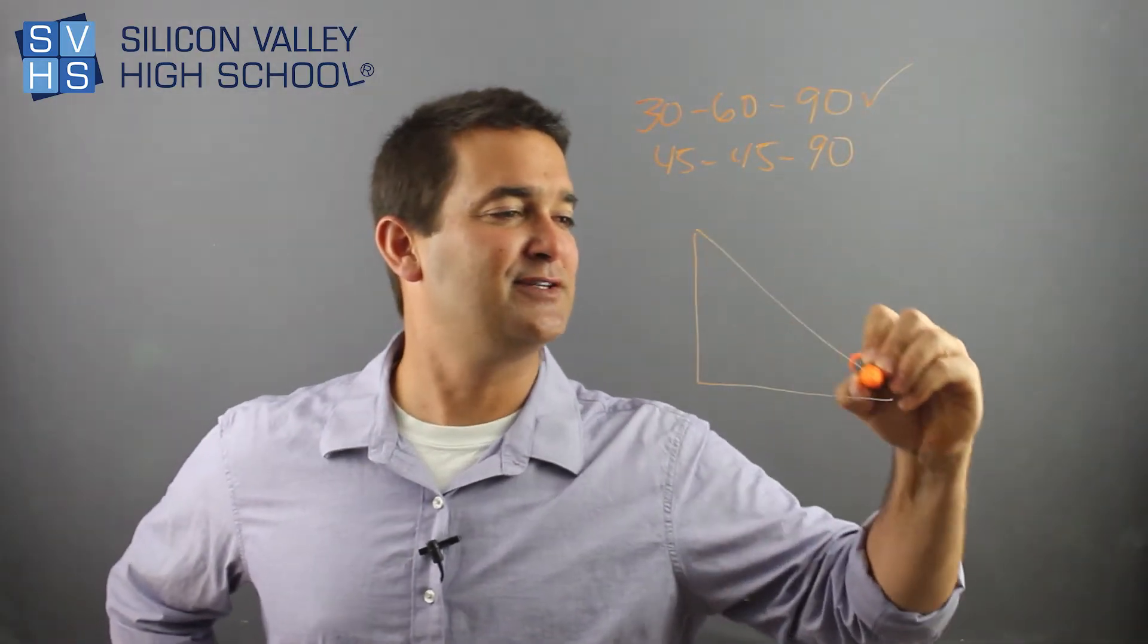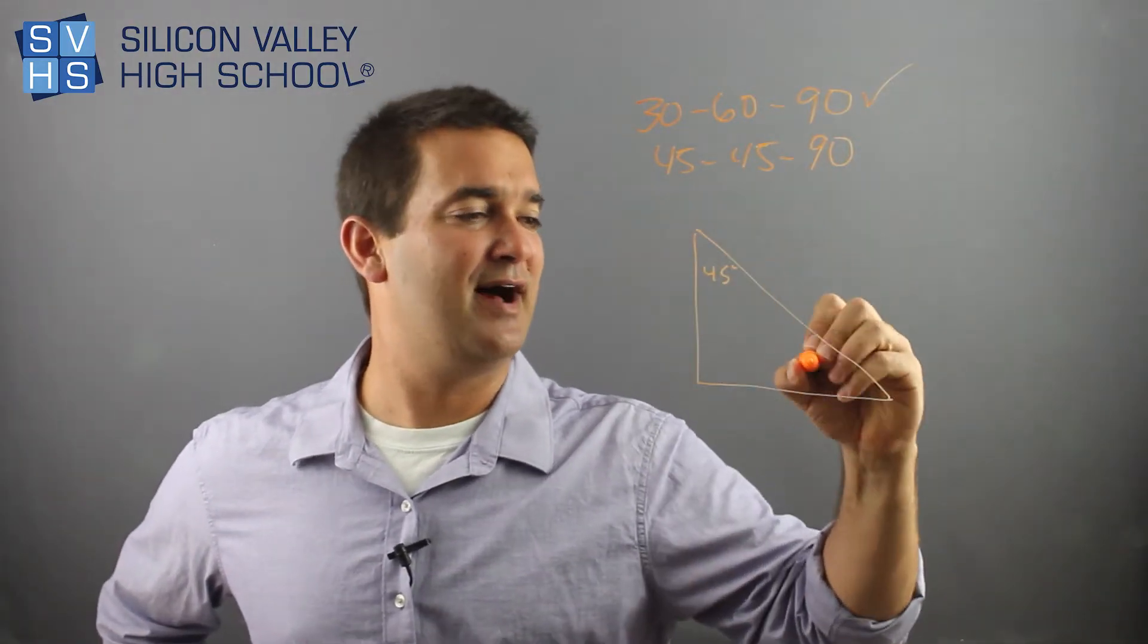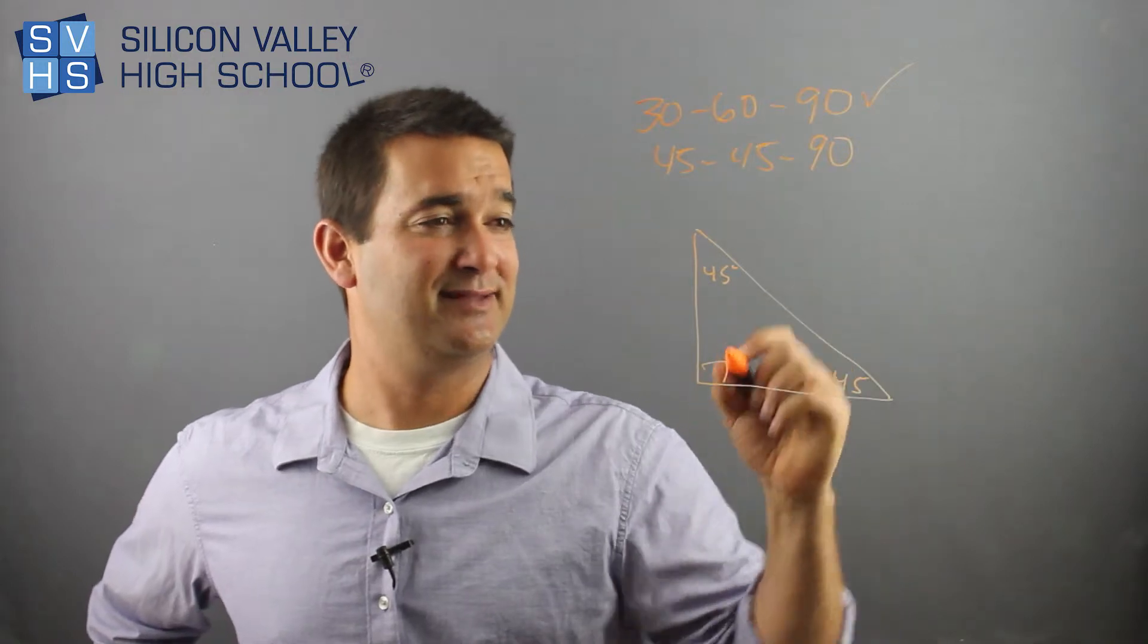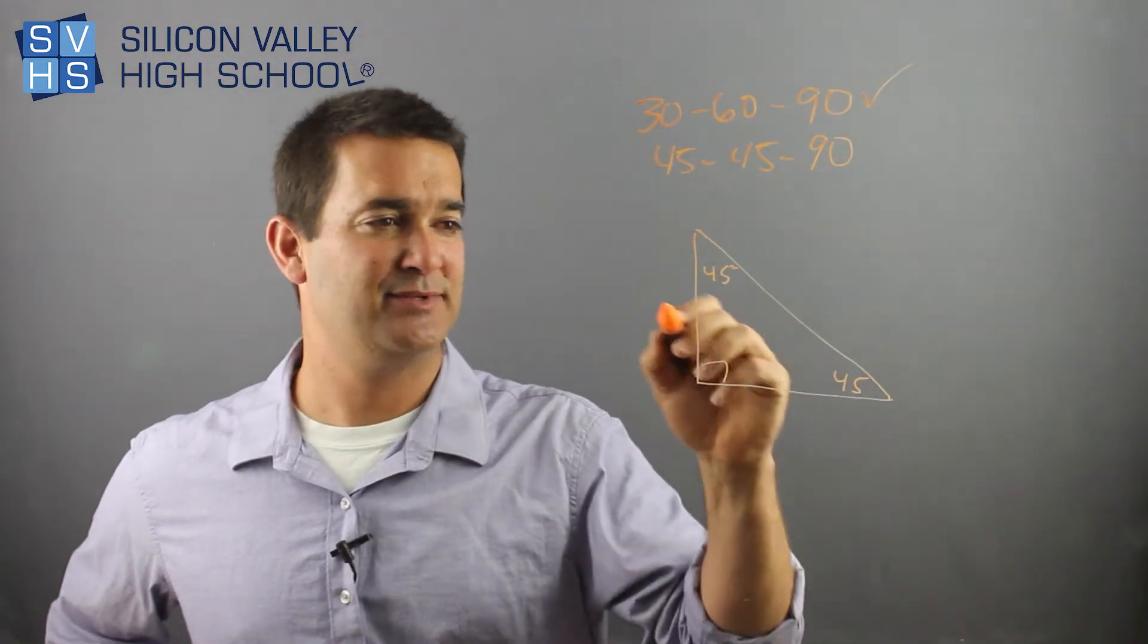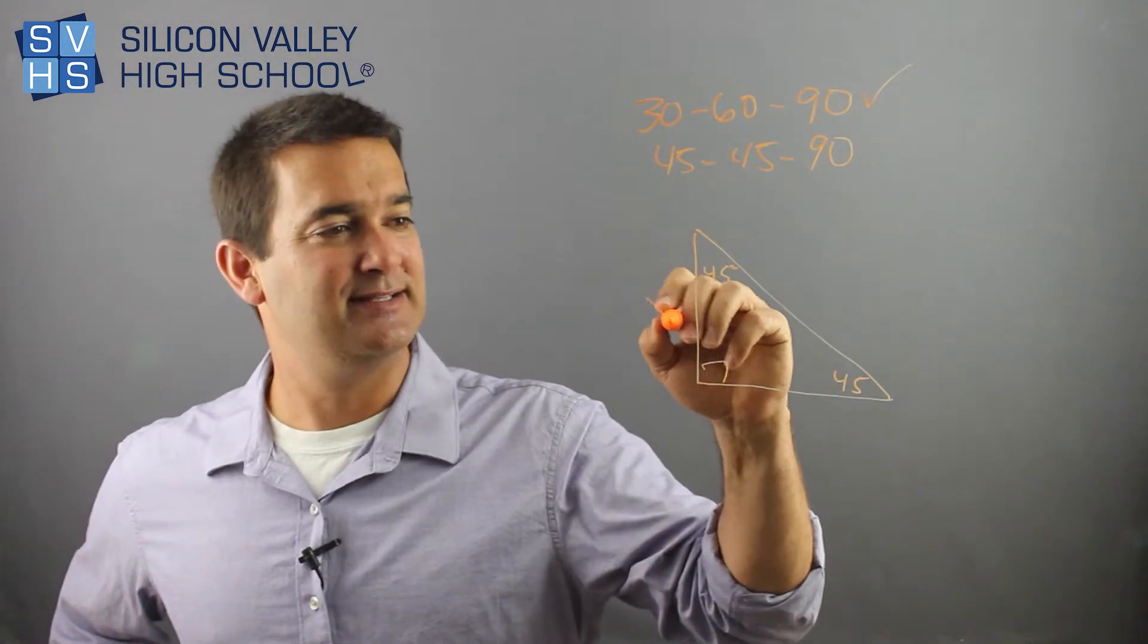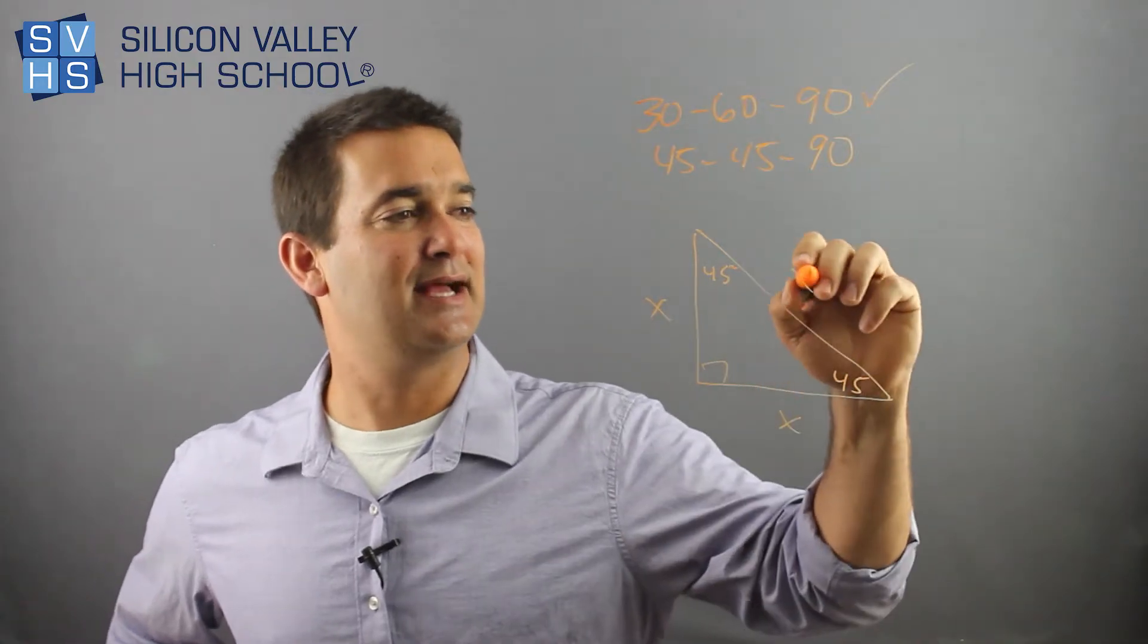It's like this. So first of all, if these are both 45, the sharpies out there are thinking, well, if these angles are the same, so are the sides. And that's true. It's x, x, and x root 2.